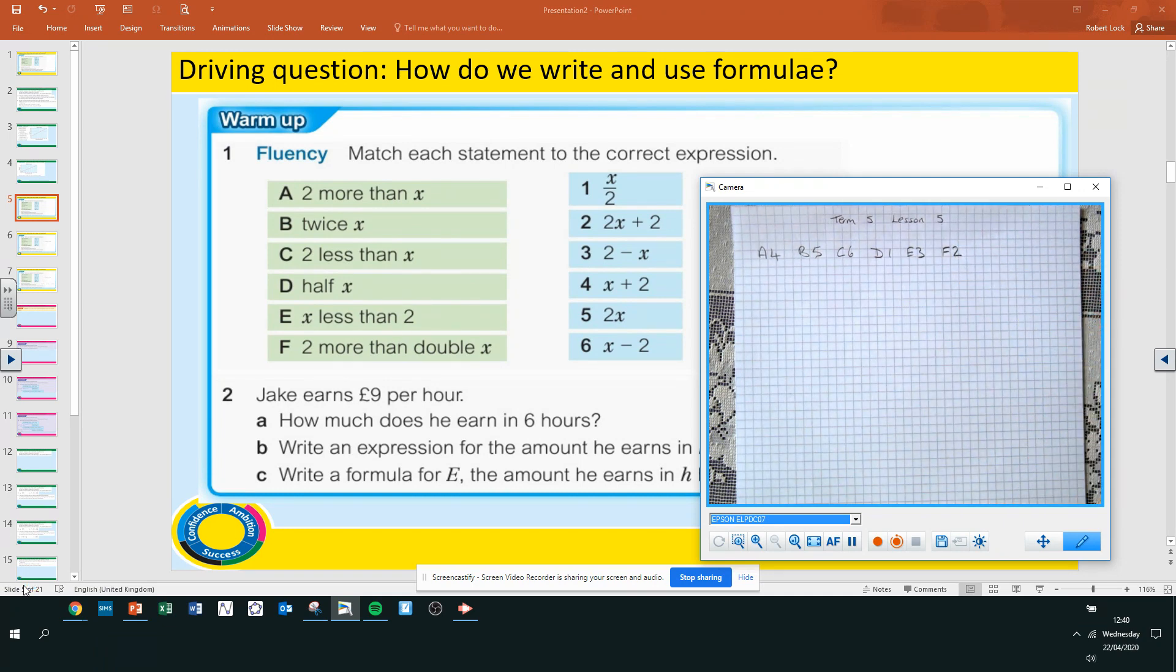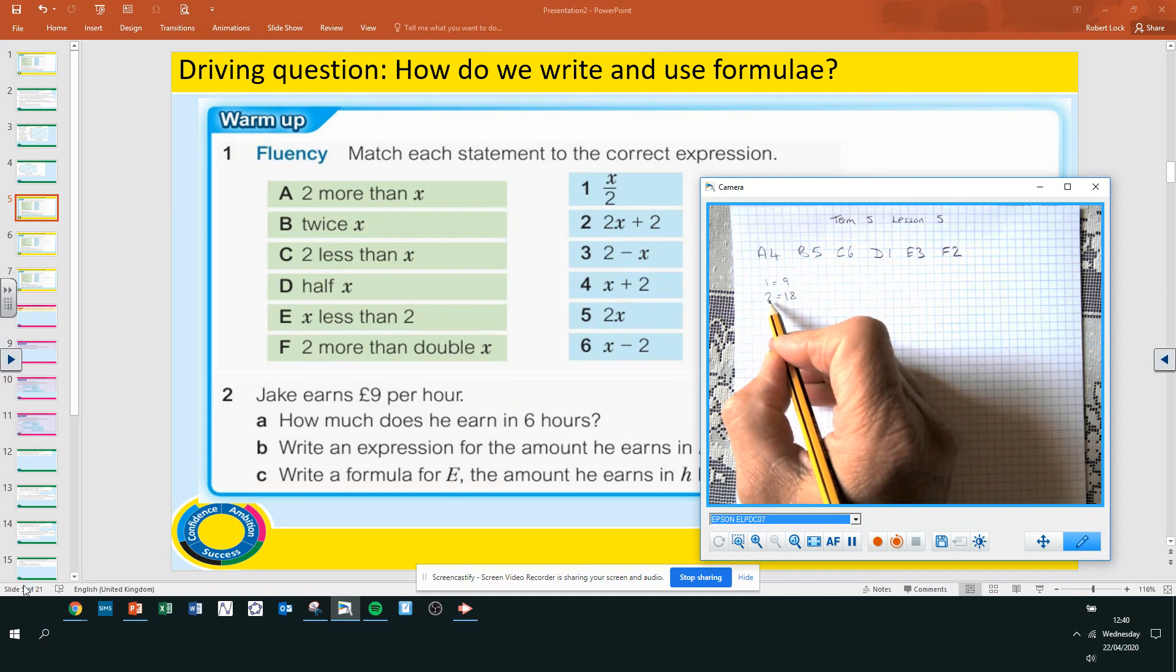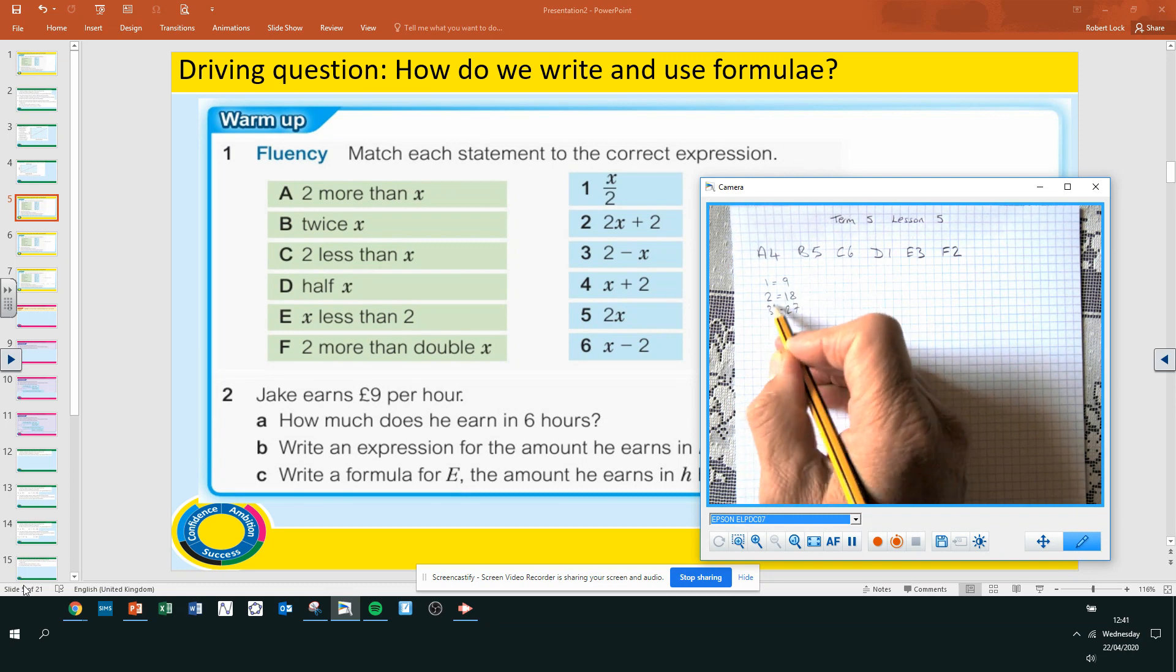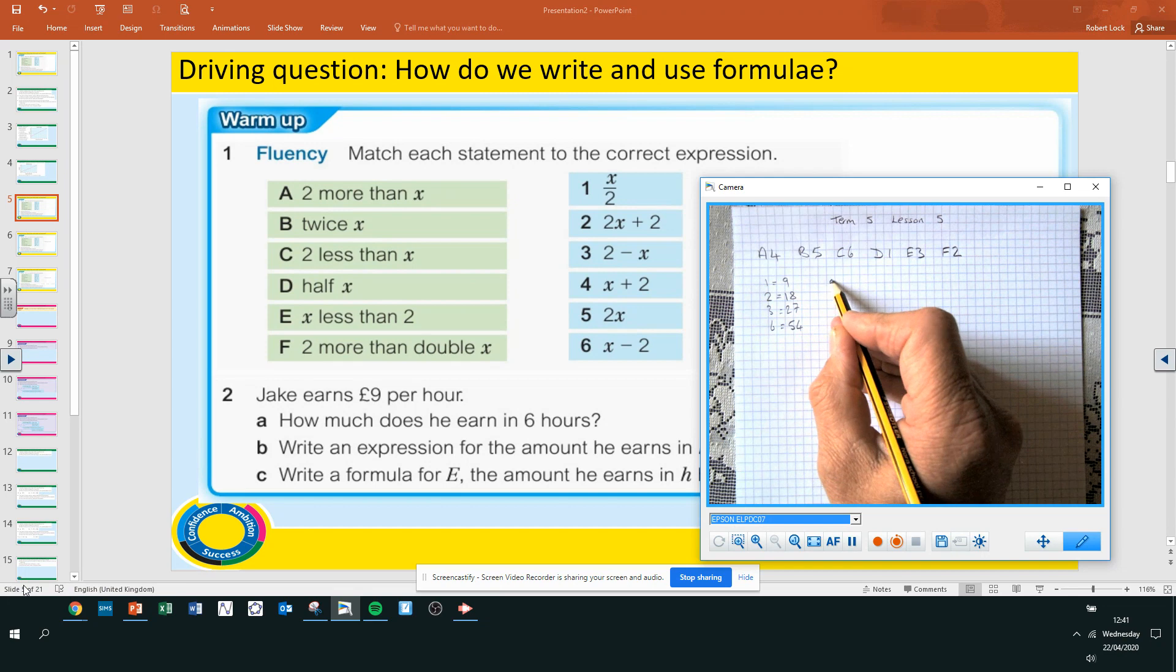Next question, question 2. Jake earns £9 an hour. How much does he earn in 6 hours? So 1 hour equals £9, 2 hours equals £18. Well, this is just multiplication. 2 times 9 is 18, 3 times 9 is 27. So 6 times 9. 6 times 9 is 54. So he earns £54.